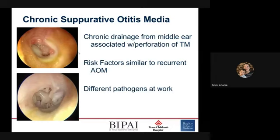Chronic suppurative otitis media usually extends from AOM that's not fully treated or diagnosed too late. Reasons it becomes chronic include: different pathogens from the external ear migrating into the middle ear after TM perforation, pathogens forming biofilms that make it difficult for antibiotics to penetrate, and baseline eustachian tube dysfunction that keeps the tube clogged, making it hard to clean out the ear.